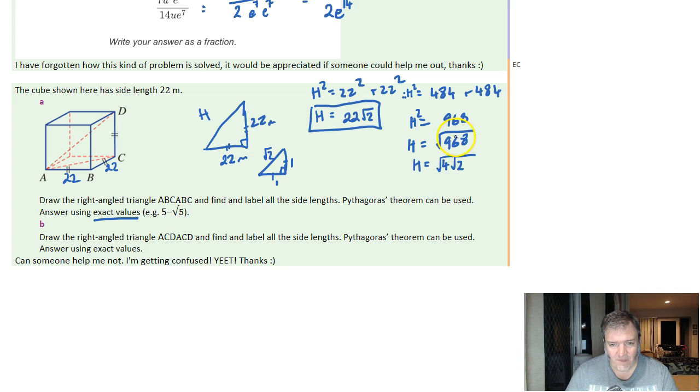4 will go into 968 how many times? It'll go into 9 twice, carry the 1 into 16, 4 times, and 8 twice. Well, that worked. 4's not going to go into that anymore, so there's no point looking for another factor of 4.